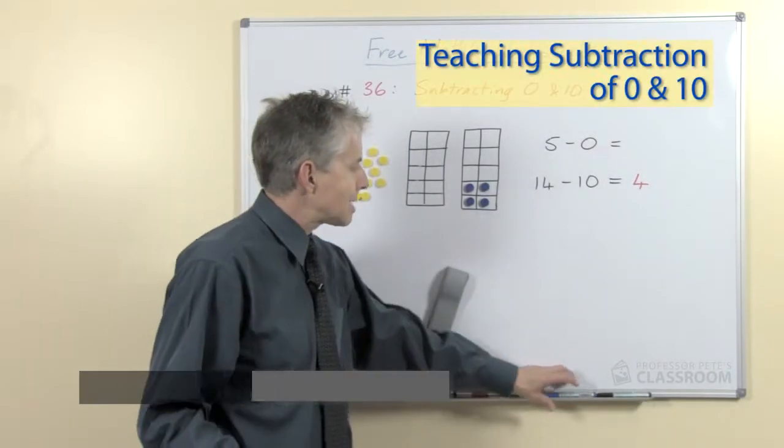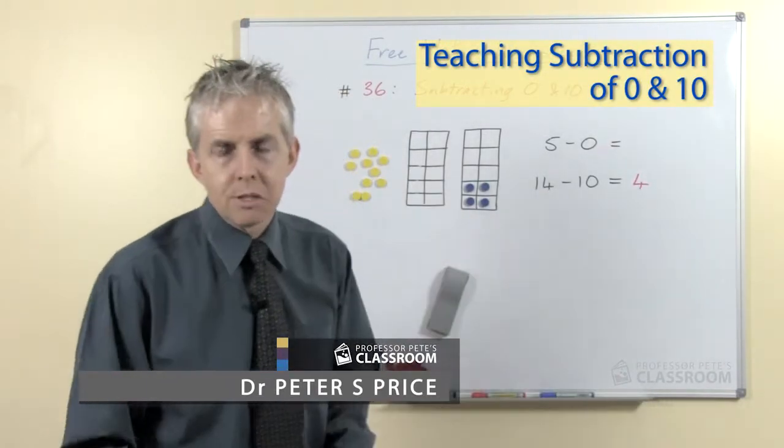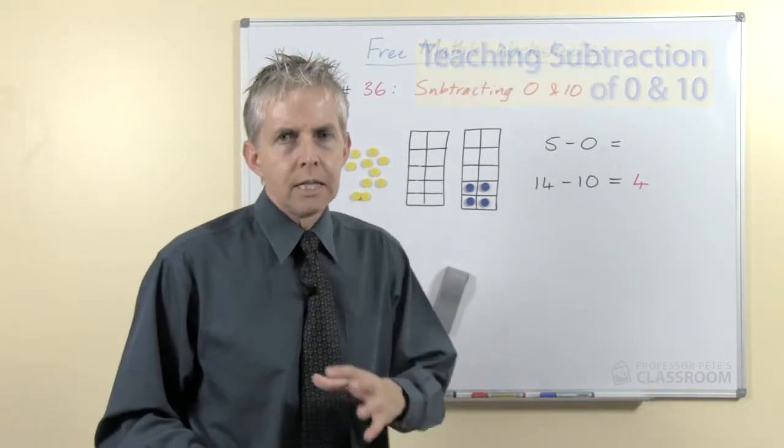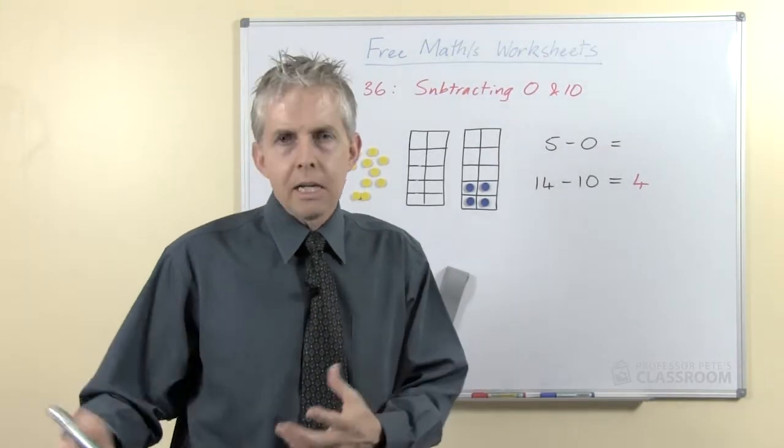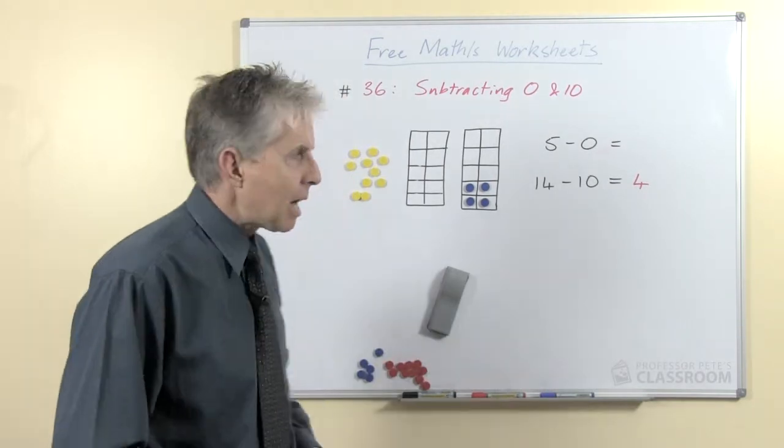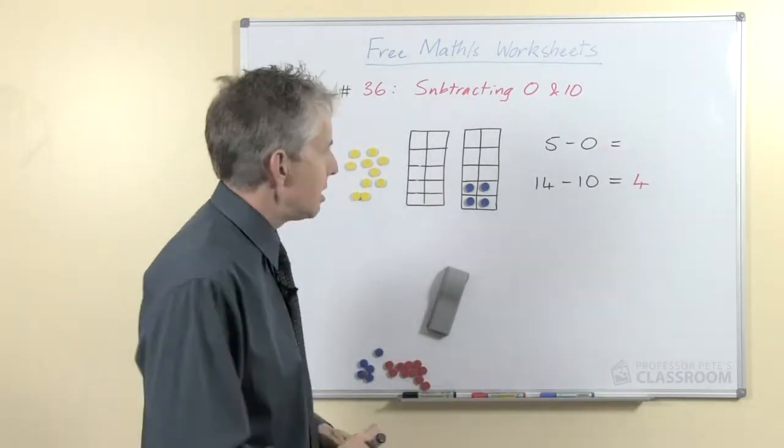Now at first glance zero might seem to be the easiest number to subtract because the answer is the same, but of course that's fairly tricky to understand conceptually. So we'll wait, and in that book it actually comes in week five in the series after the students have learned about taking away other quantities.